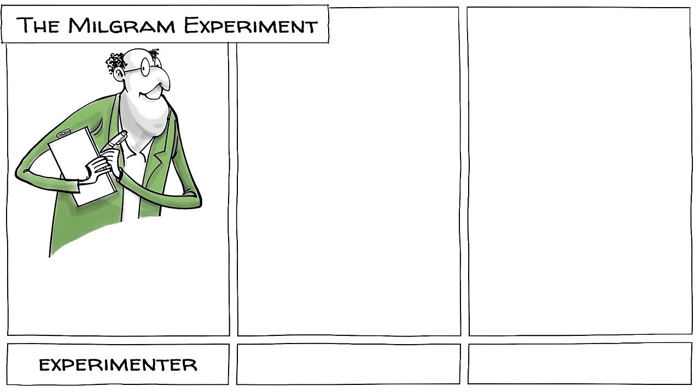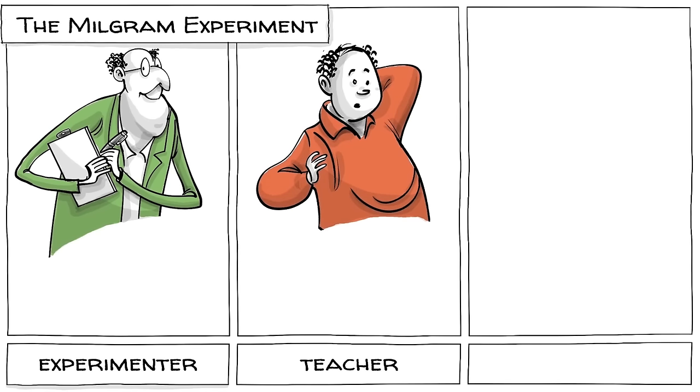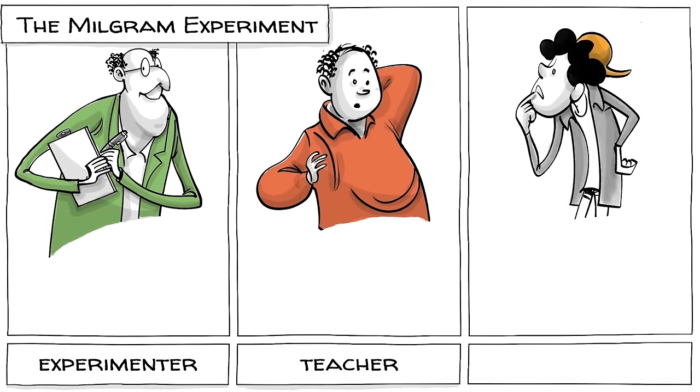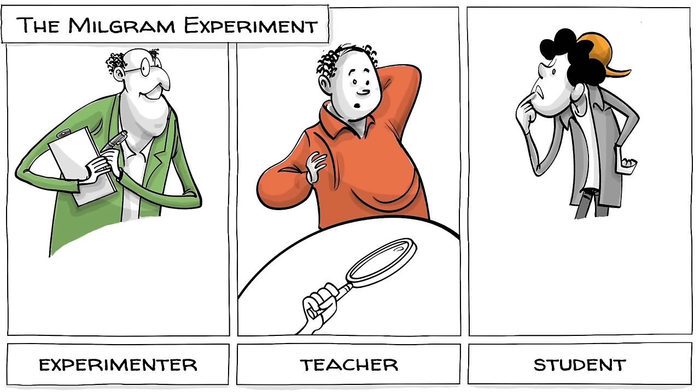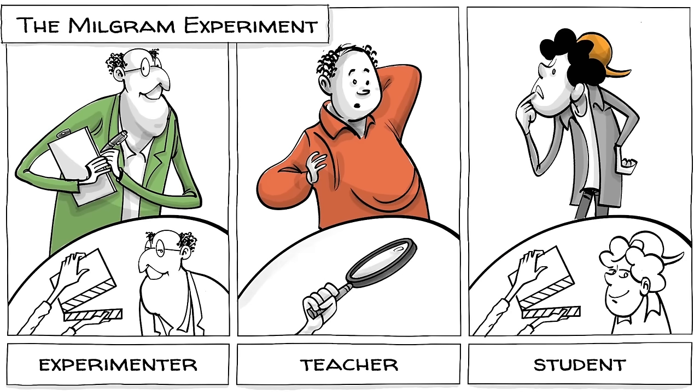The Milgram experiment involved three people. An authority, called the experimenter, who was dressed in a lab coat to appear powerful. A volunteer, who was assigned to be the teacher. And a victim, the so-called student. The teacher was the test subject, whereas the experimenter and student were both actors.